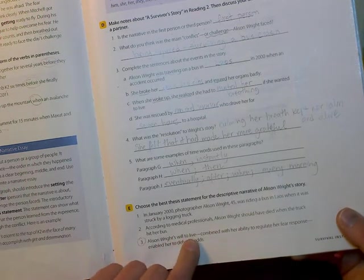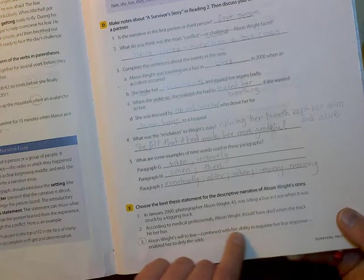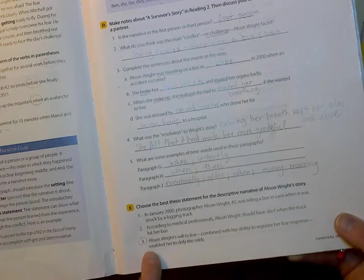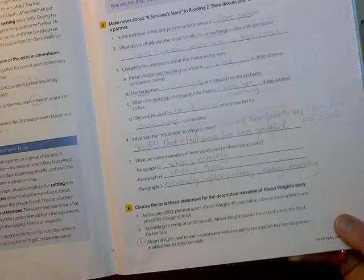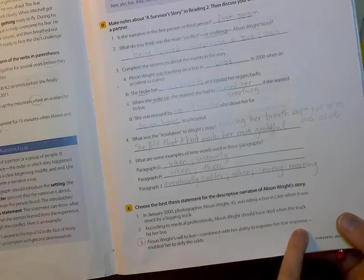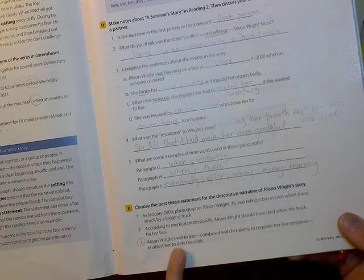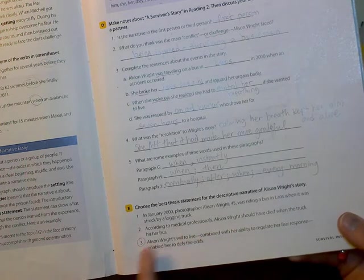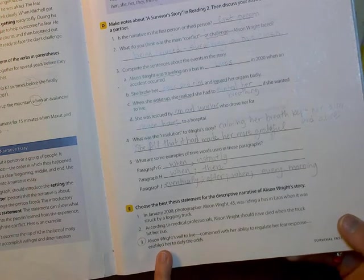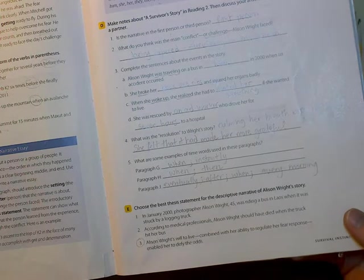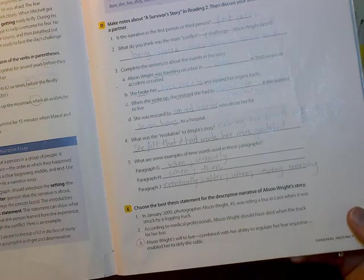Number three. Allison Wright's will to live, combined with her ability to regulate her fear response, enabled her to defy the odds. Yes, this is the meaning of the whole narrative. What is it trying to teach us? It's trying to give us an example to show that regulating your fear response and having a strong will and desire can actually help you in emergency situations to survive, even when it seems medically impossible. So that was the meaning of the story. All right, good job, everybody. Thank you.